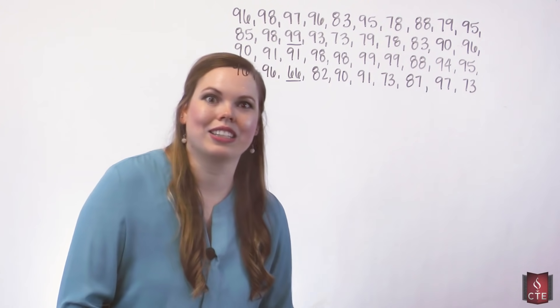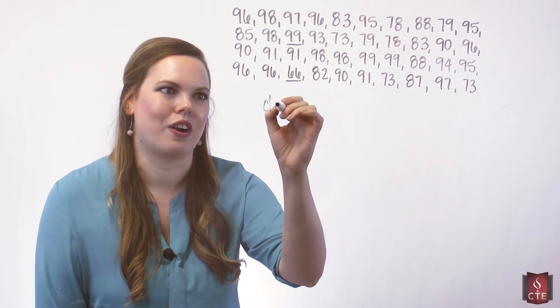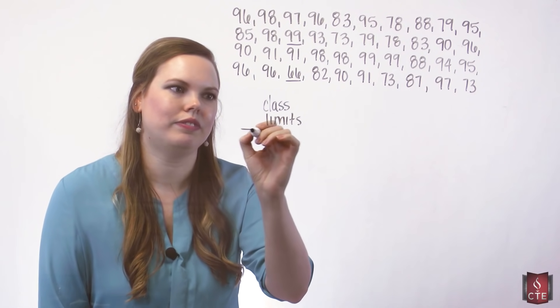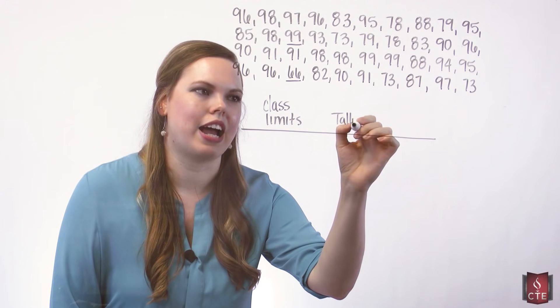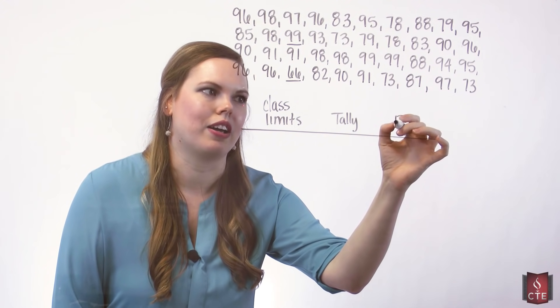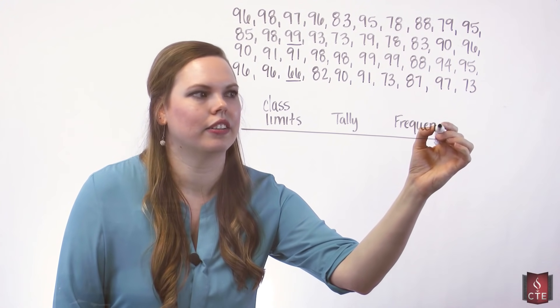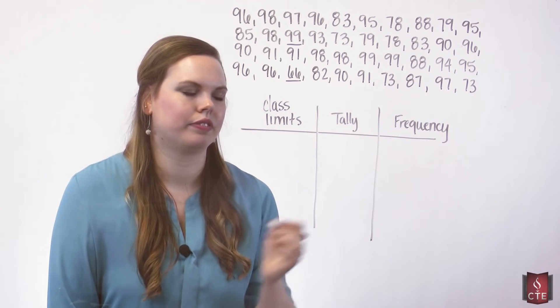Keep in mind, our class width is 5. We want to start our class limits for our frequency distribution. So, this is our class limits. Our frequency distribution also keeps up with a tally. I'll show you why we do that in just a second. And then our frequency.